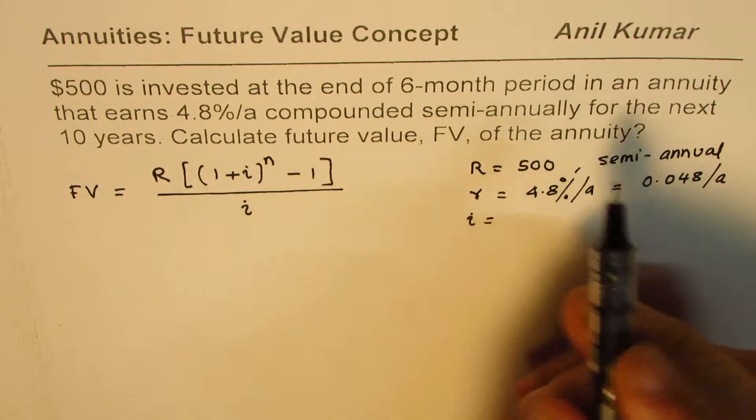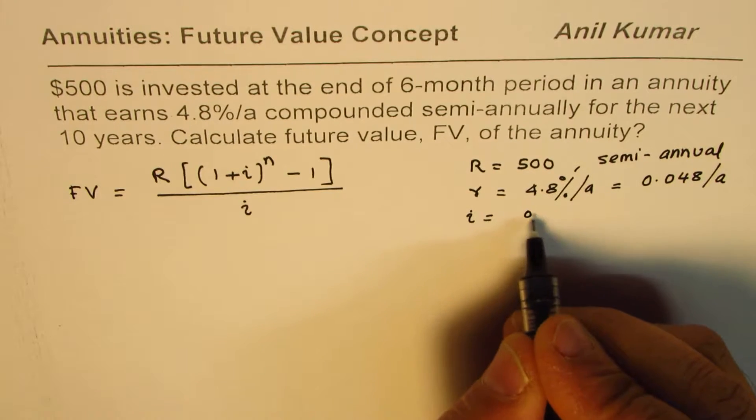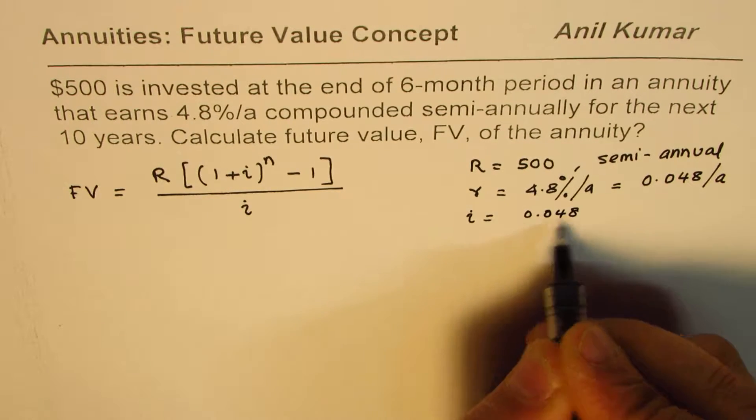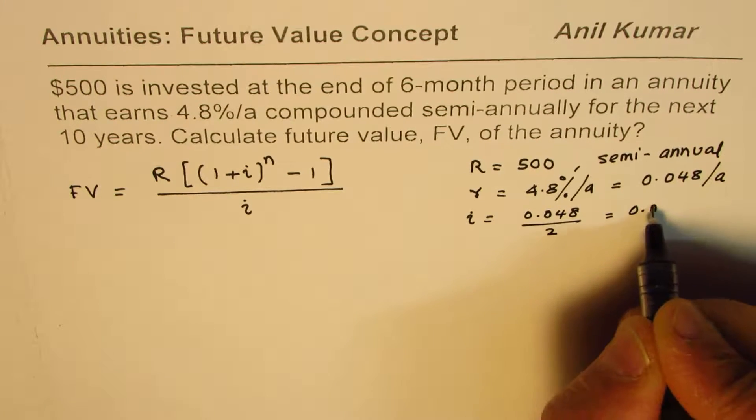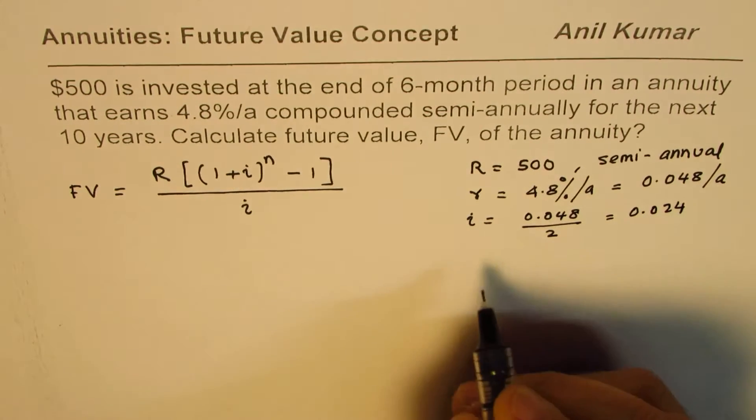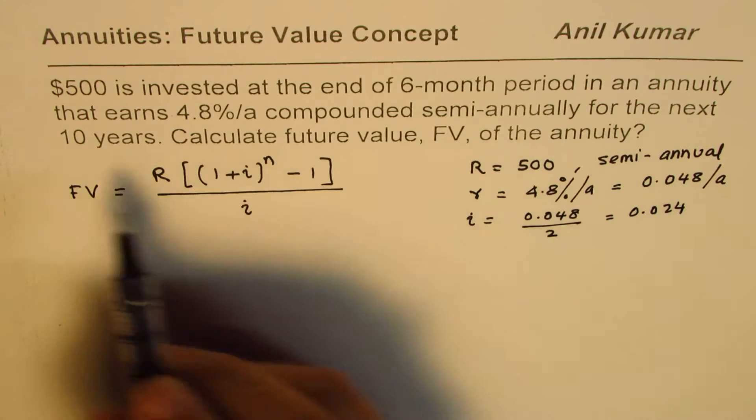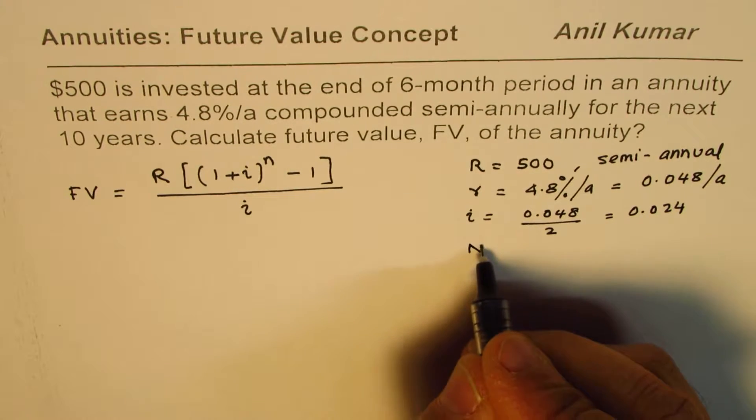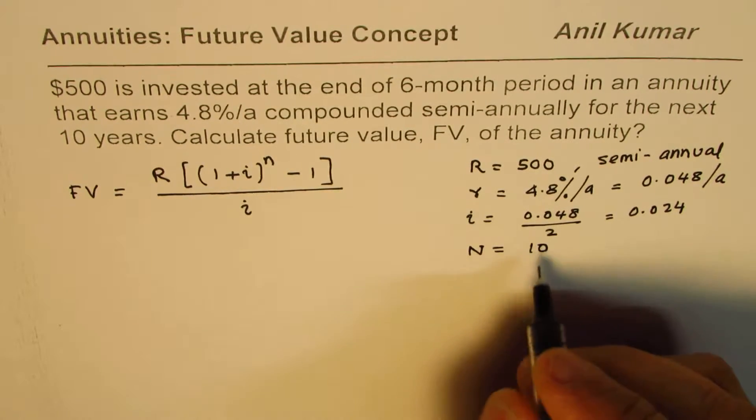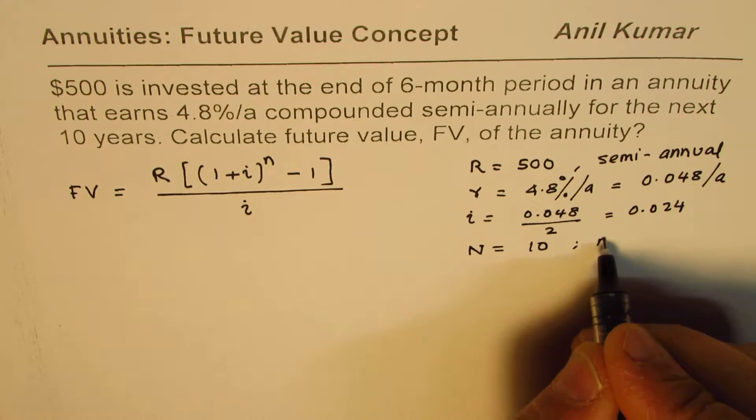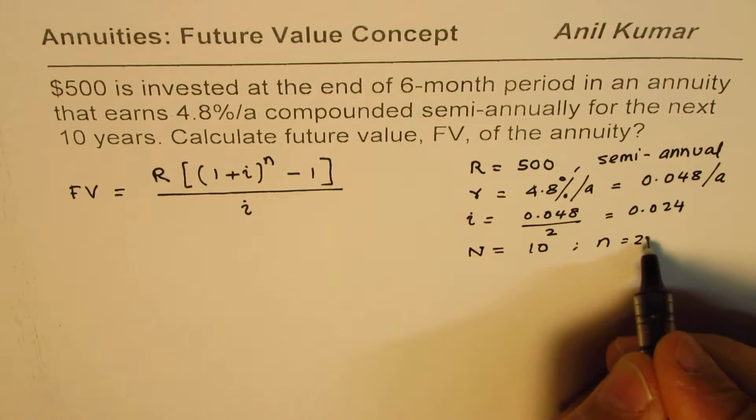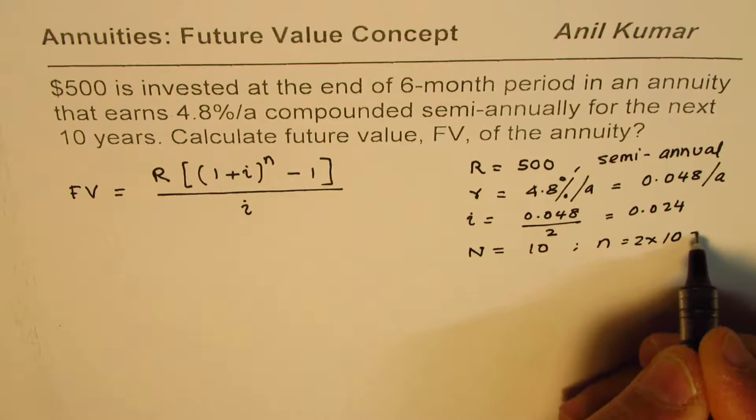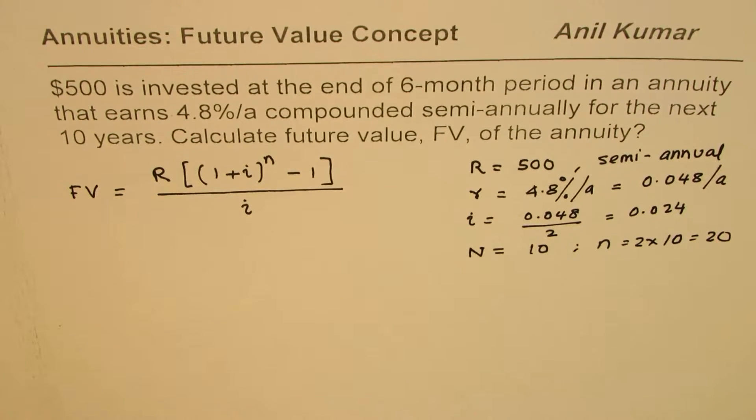Now number of years is 10, capital N I'm using is 10. So the small n, which is the compounding period, since we are doing twice in a year, will be 2 times N which is 20. So small n is 20.